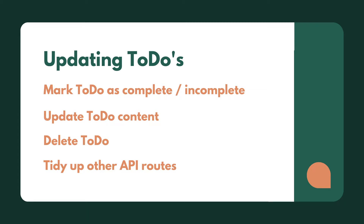Hi guys, welcome back to another lesson. In the previous lesson, we created endpoints to create todos and grab the current todos for the current user. In this lesson, we're going to look at updating todos — we're going to create endpoints to mark them as complete, mark them as incomplete, update todo content, and delete a todo. We'll also tidy up any other API routes and make some changes to the auth routes, ready to move into client work hopefully in the next lesson.